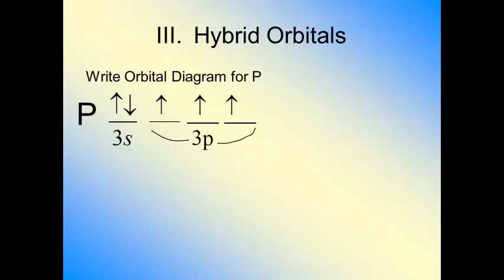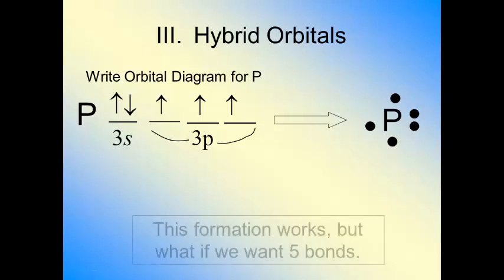Phosphorus can form three bonds. We know it's perfectly fine to draw phosphorus with a pair of electrons and three single electrons, just like we do for nitrogen. It's perfectly acceptable. PCl3, PF3, all common compounds. But what if we wanted five bonds? What if we wanted to make a trigonal bipyramidal geometry?